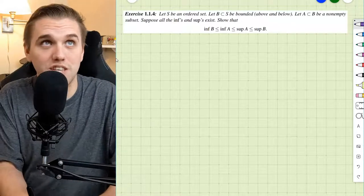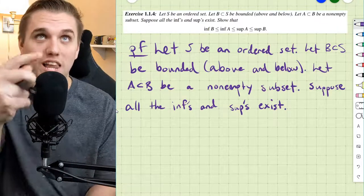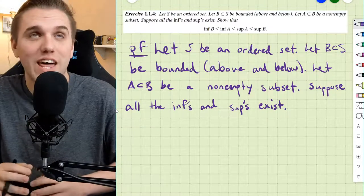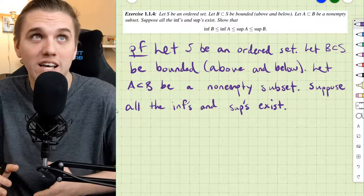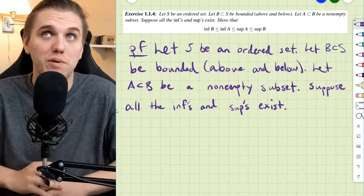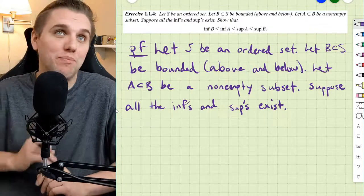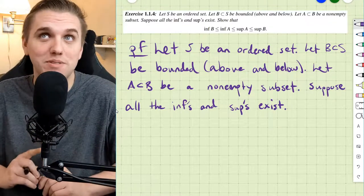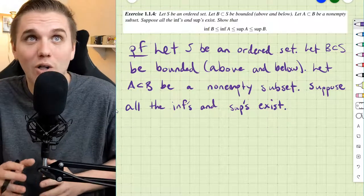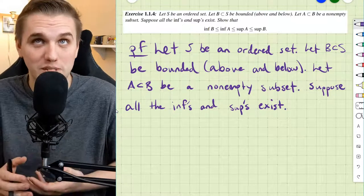So let's start with our assumptions in this proof. Let S be an ordered set, let B be a subset of S, be bounded both above and below, let A be a subset of B, be a non-empty subset, and suppose that all of the infimums and the supremums exist.